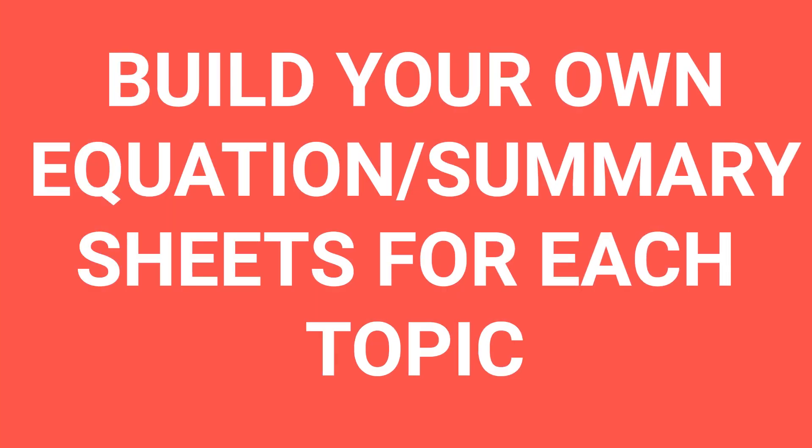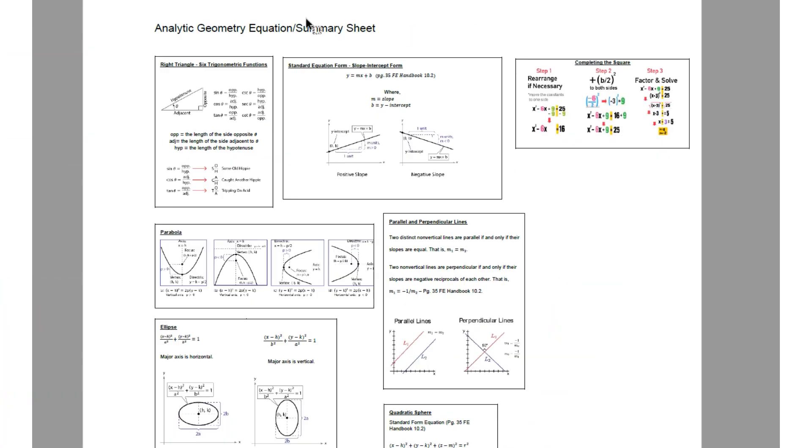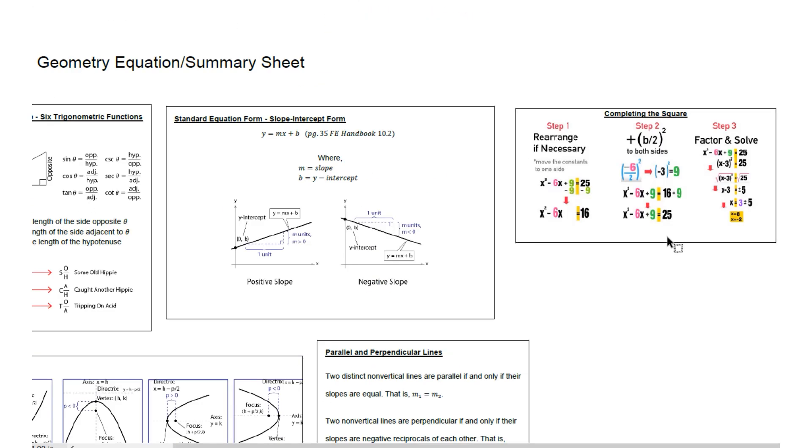Another tip: build your own equation and summary sheets for each FE topic, one topic at a time. As you review the FE topic, put key definitions, key concepts, and key equations — not necessarily those in the FE handbook, but equations that will save you time on exam day because you know how to use them quickly. Unit conversions too: if you know a unit conversion fast, that's saving you time on exam day.